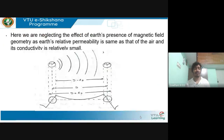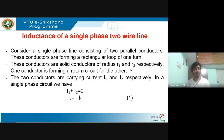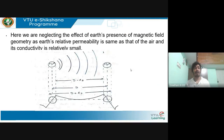i1 is the current of conductor one and i2 is the current of conductor two. In a single phase circuit, i1 plus i2 equals zero, so i2 equals minus i1, since one conductor forms a return circuit for the other. We are also neglecting the effect of Earth's magnetic field, as Earth's relative permeability is the same as that of air and its conductivity is relatively small.